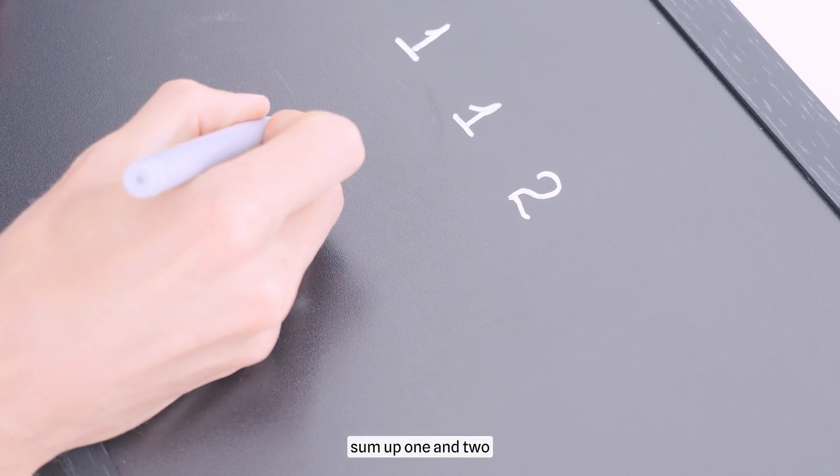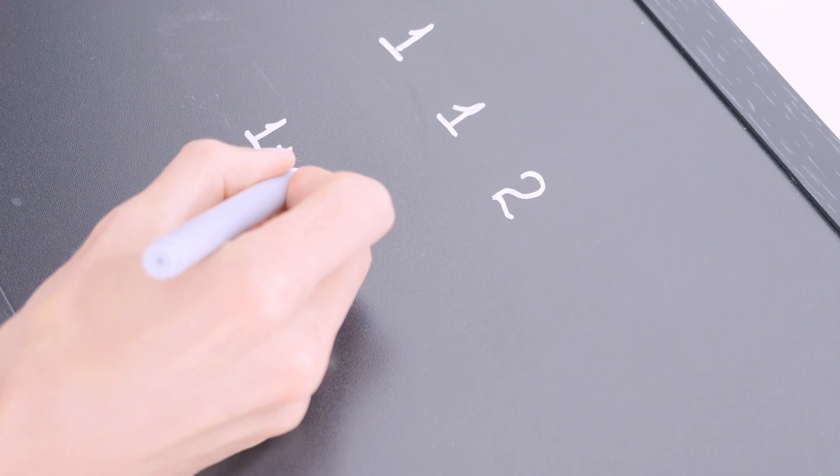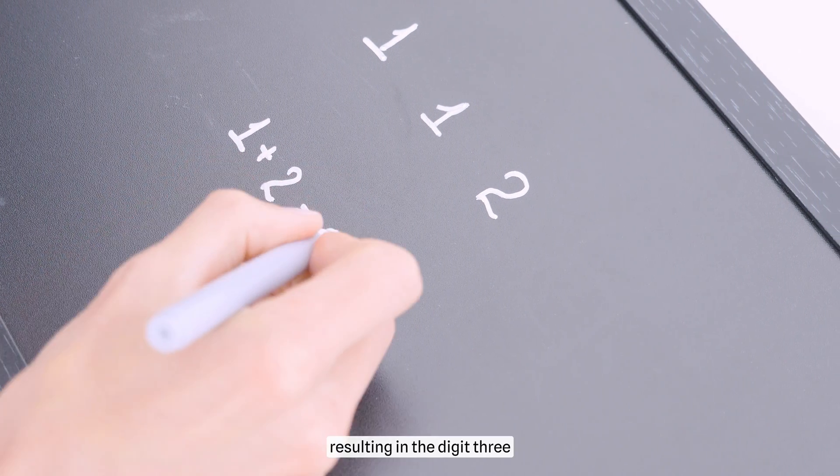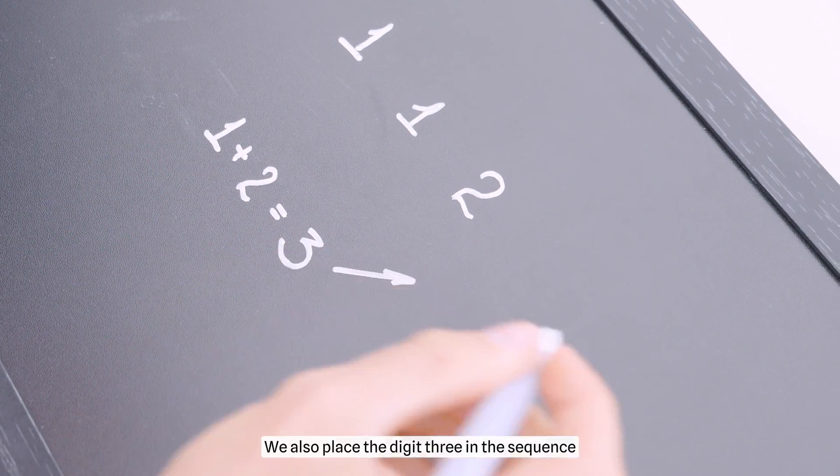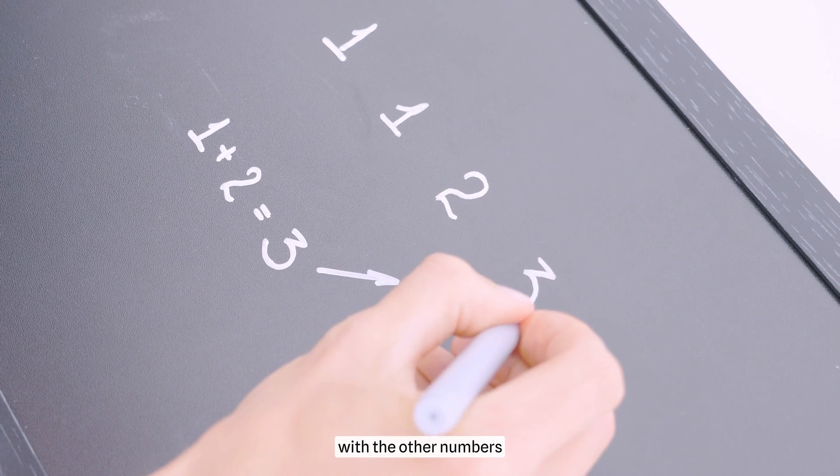Now sum up 1 and 2, resulting in the digit 3. We also place the digit 3 in the sequence with the other numbers.